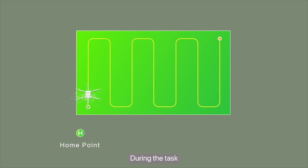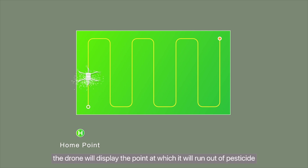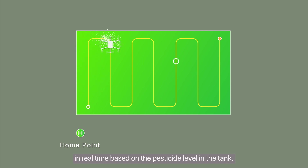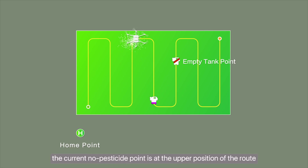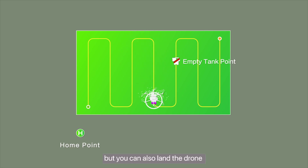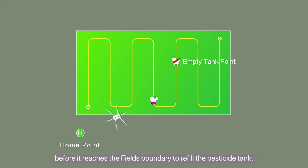During the task, the drone will display the point at which it will run out of pesticide in real time based on the pesticide level in the tank. You can choose to land the drone nearby as prompted. For example, the current no-pesticide point is at the upper position of the route, but you can also land the drone before it reaches the field's boundary to refill the pesticide tank.